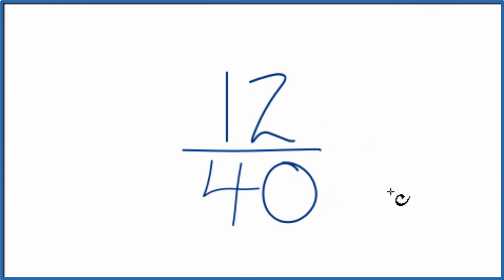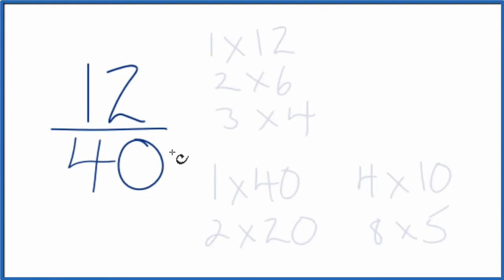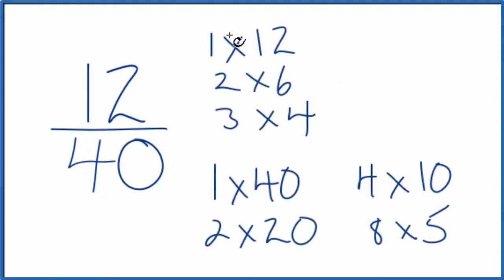So we need to find a factor that goes into 12 and 40, a common factor. So let's write the factors of 12 and 40. So these are the factors of 12 and then 40.